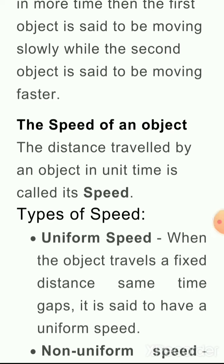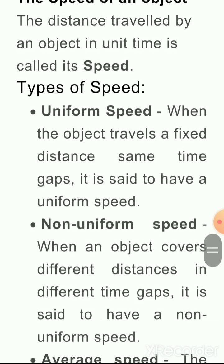The speed of an object: the distance travelled by an object in a unit time is called speed. किसी भी object की speed वो होती है — वो कितनी तेजी से चल रहा है। जब कोई distance travel की जाती है object की एक unit time में, that is called speed.